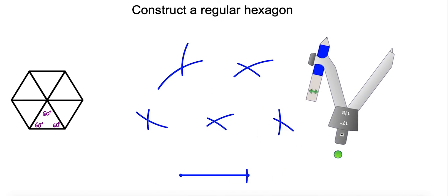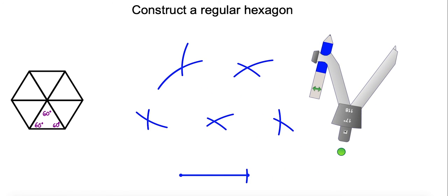That's our sixth point. All we have to do to finish this is connect the points with straight lines. For this part you definitely want to use a straight edge. Don't do this freehand otherwise it's going to come out sloppy. And there we have it, that's our regular hexagon.